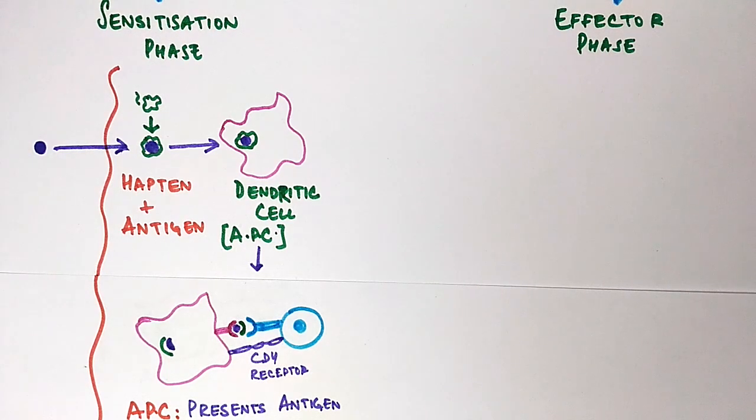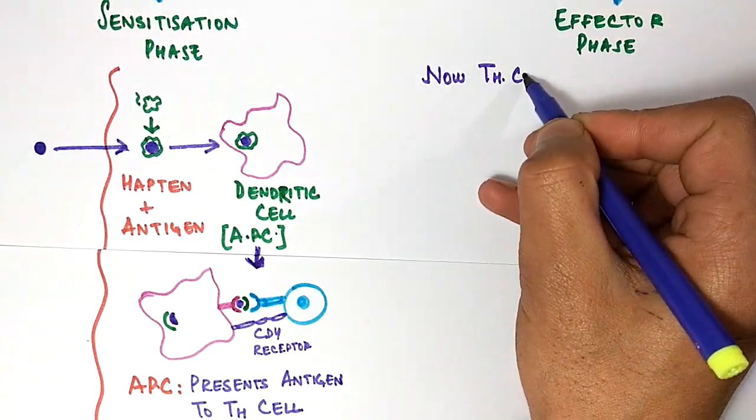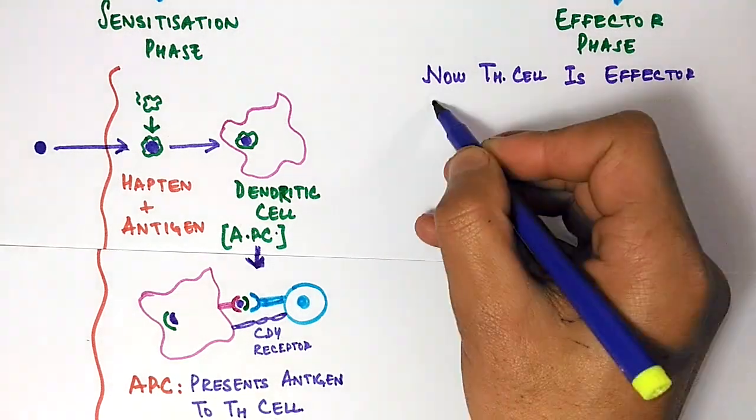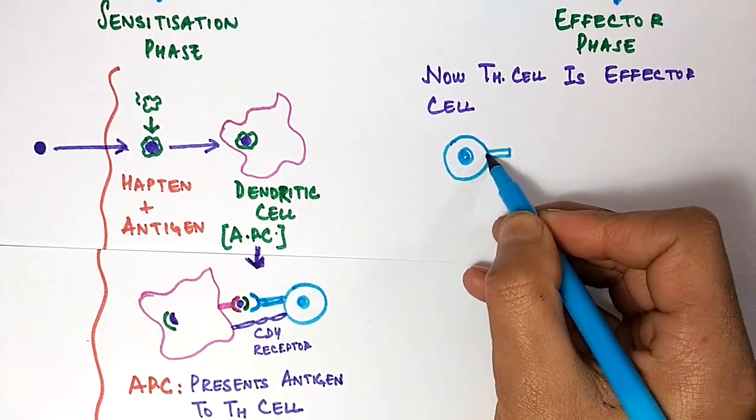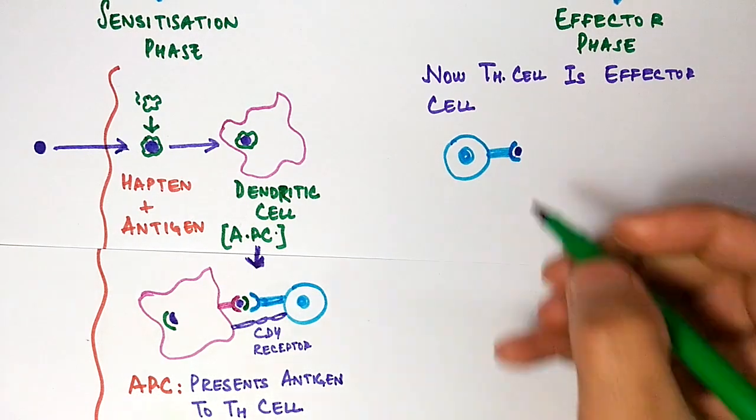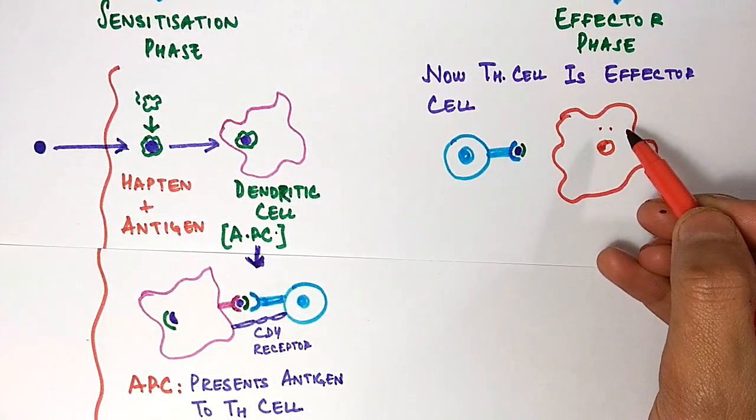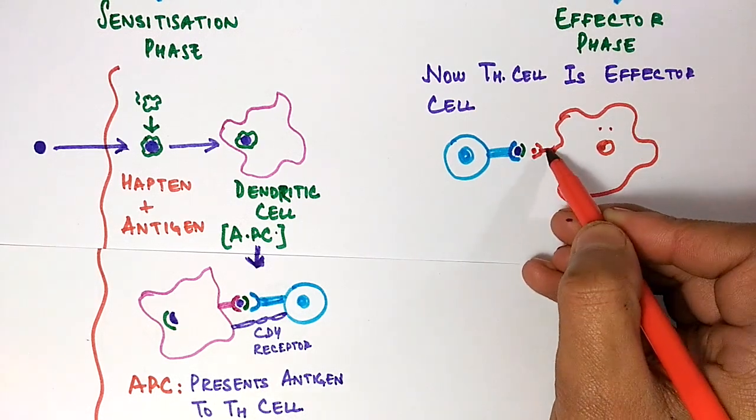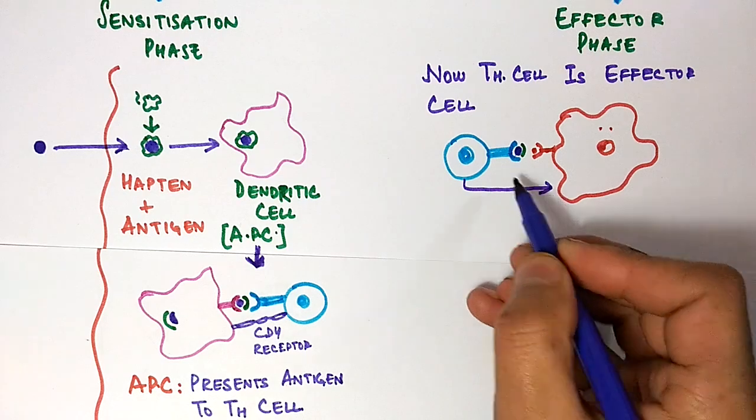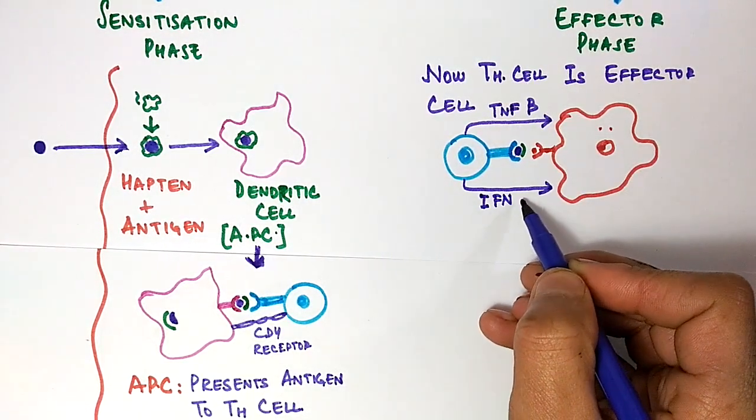After the sensitization phase is over, the effector phase comes into play. In the effector phase, the T cell which logged out from the APC carries a signal of this antigen. This T helper cell helps to activate the macrophages which are at the resting phase. This T cell is able to generate activation of macrophages when it secretes TNF-beta and IFN-gamma, interferon gamma or tumor necrosis factor beta.